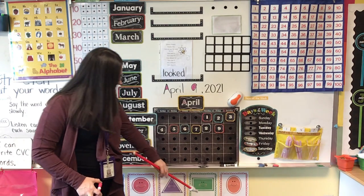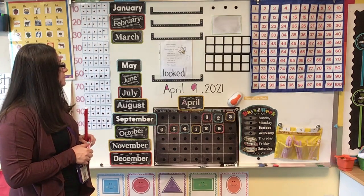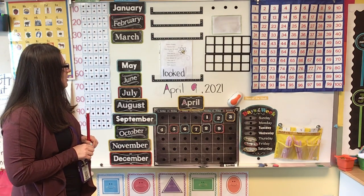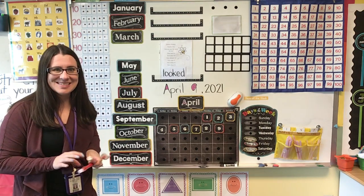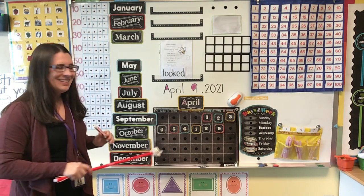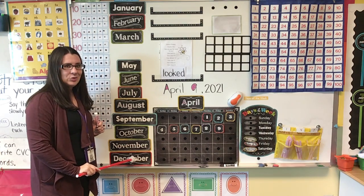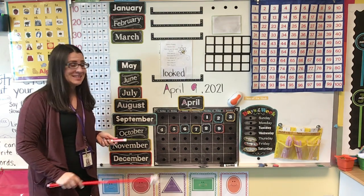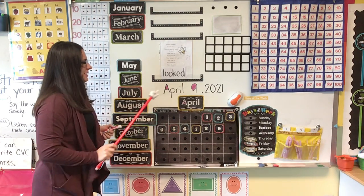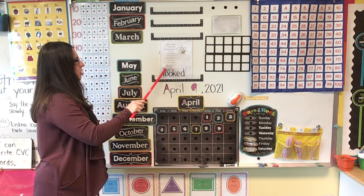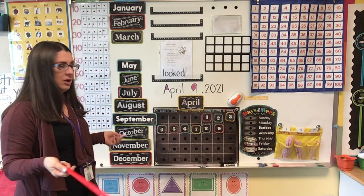Do you see anything that's the shape of a rectangle on the calendar? There's a lot of them, isn't there? Like all of these months are rectangles — they're different sizes, but they're rectangles. So this is a rectangle. The calendar is the shape of a rectangle. Our word cards — even this piece of paper is a rectangle.